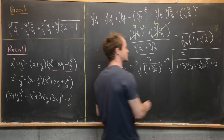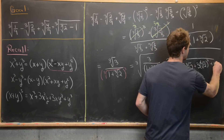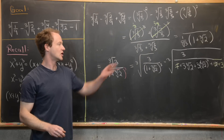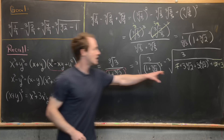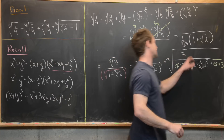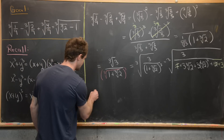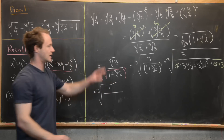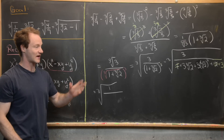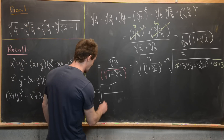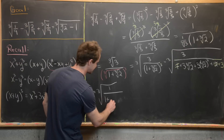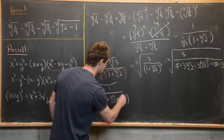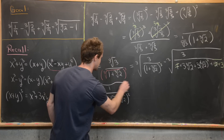Notice that 1 and 2 in the denominator add together to give 3, which we can factor out of all three remaining terms and cancel with the numerator. That gives us the cube root of 1 over (1 + cube root of 2 + cube root of 2 quantity squared).